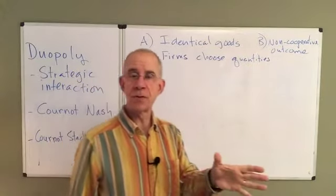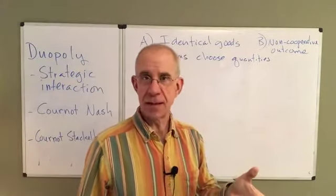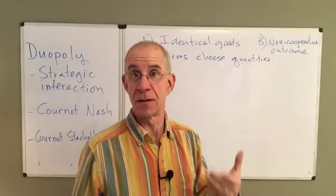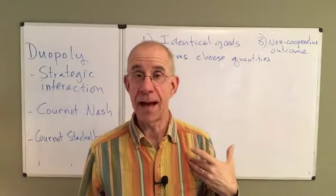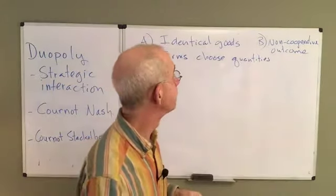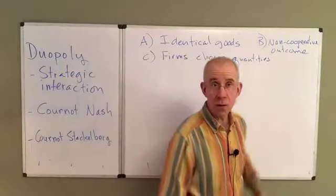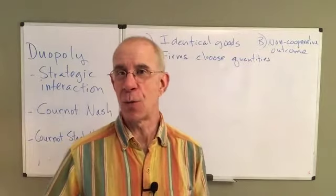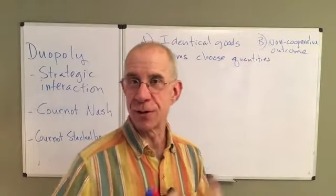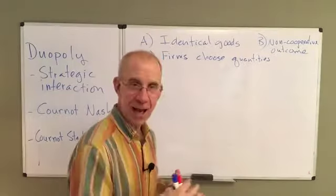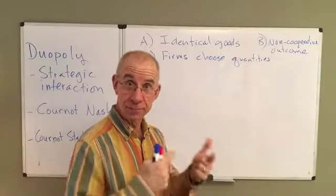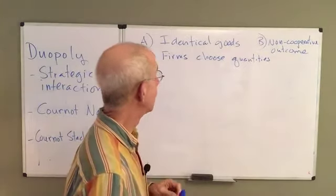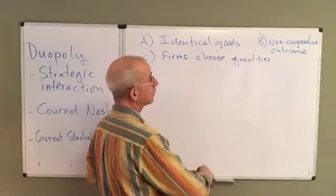You have two firms. They operate in the market, they both produce exactly the same thing, and they know that the other firm exists and that there may be some reactions to what one does by the other firm. We're going to do this in what's called a non-cooperative outcome. So we're not going to have a situation where these two firms collude with each other. Instead, they are rivals, each trying to do the best they can with their own profits.